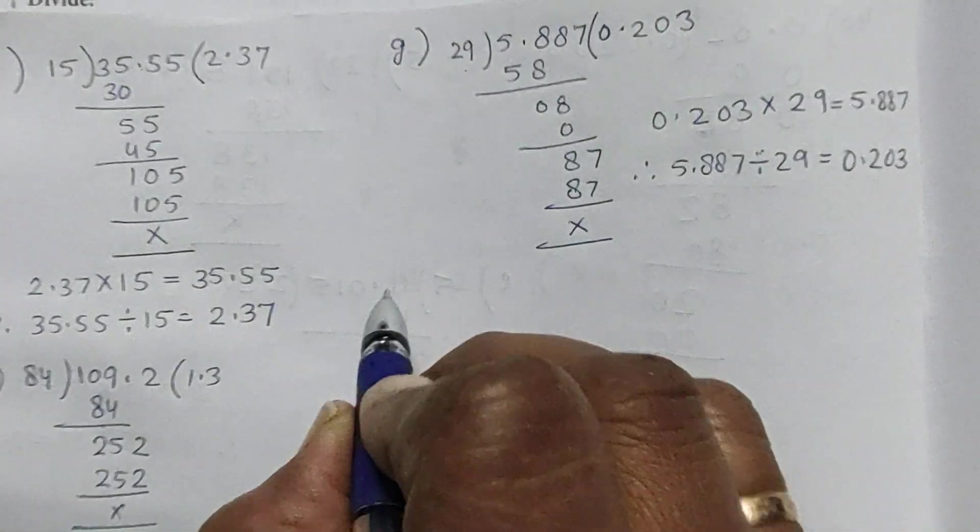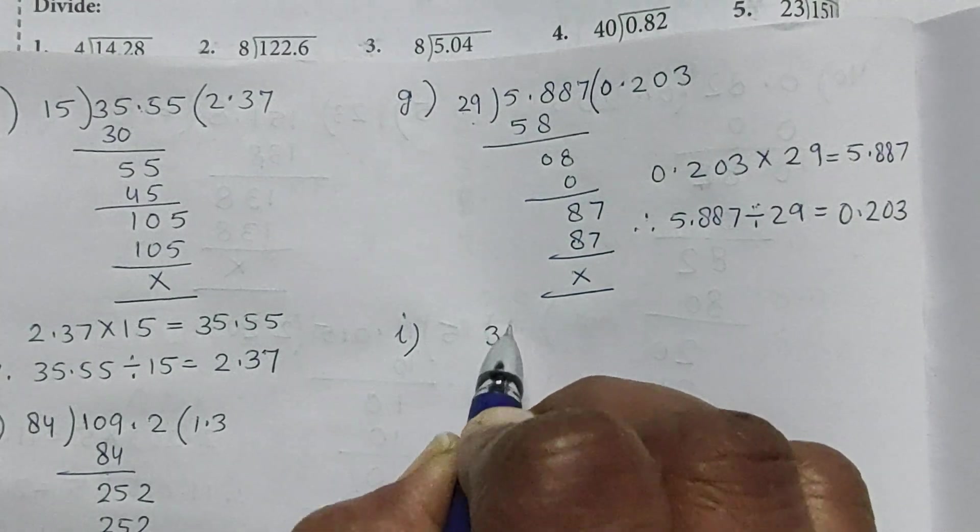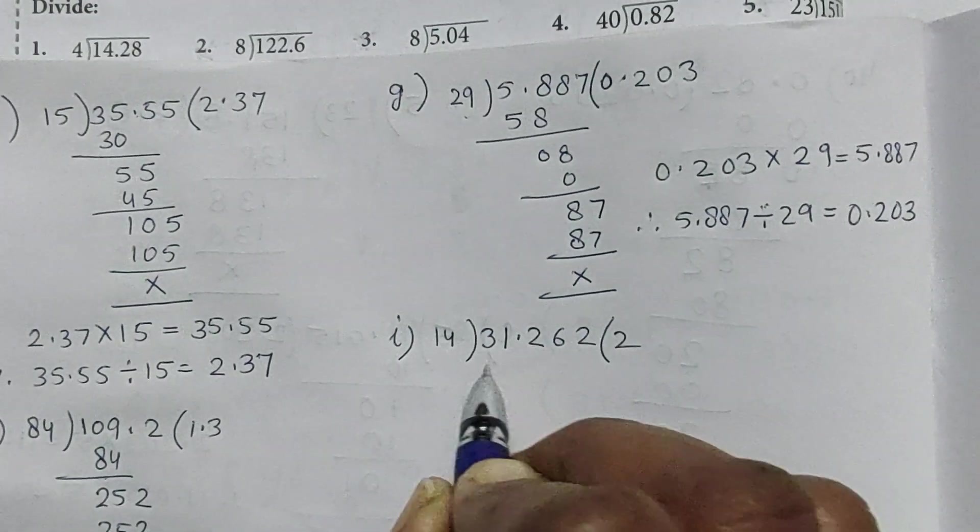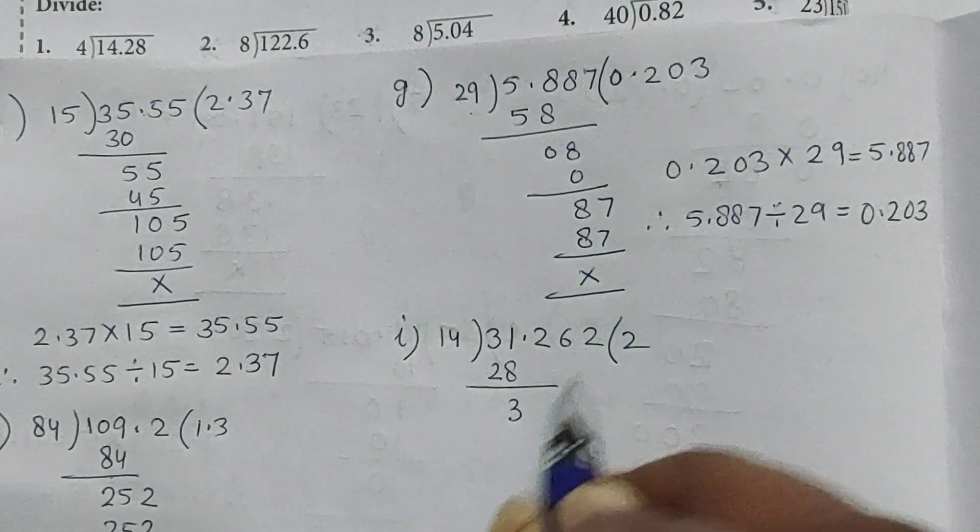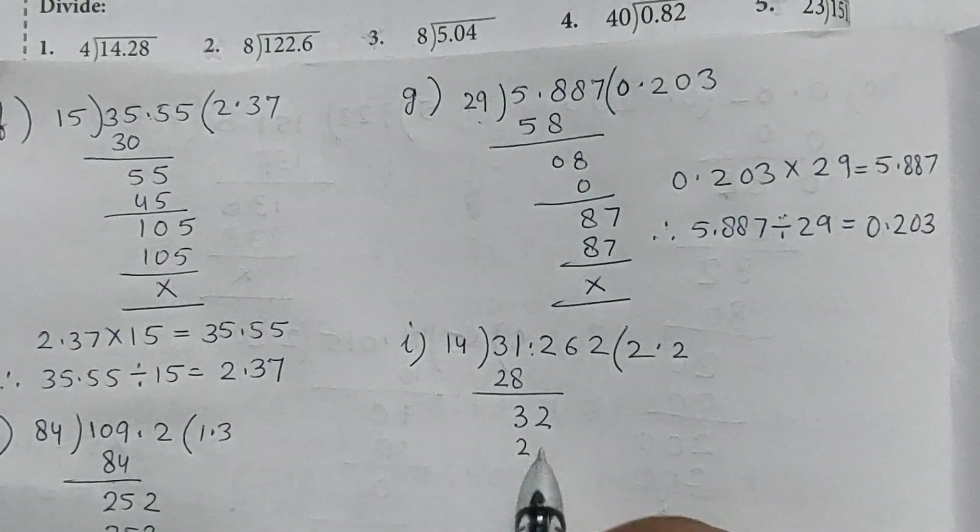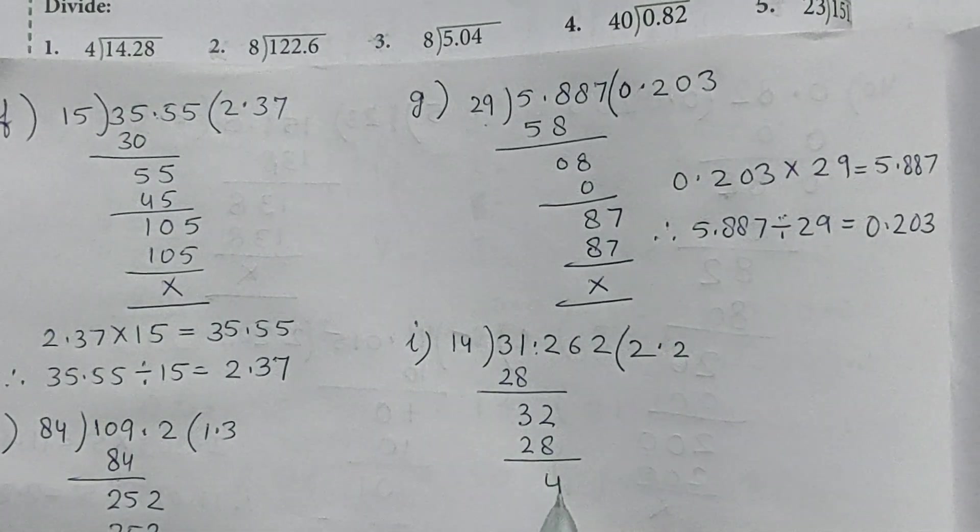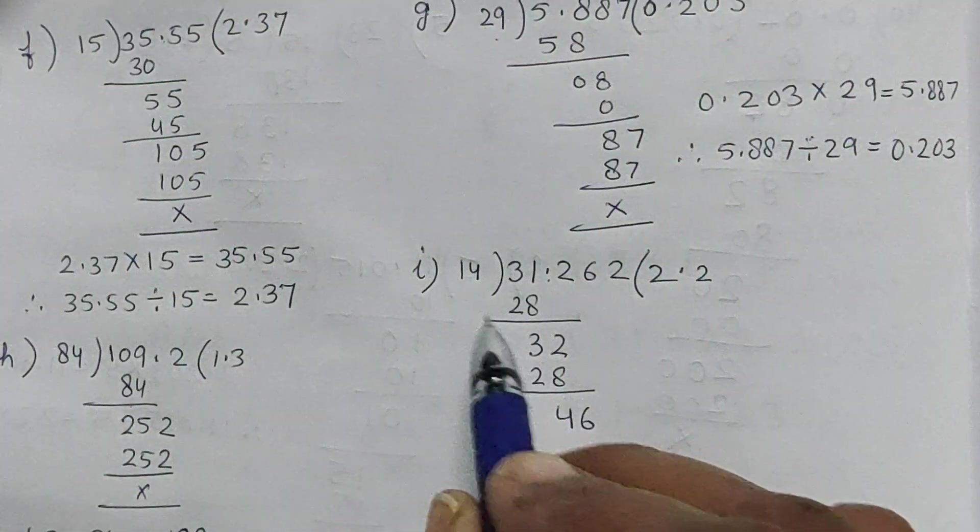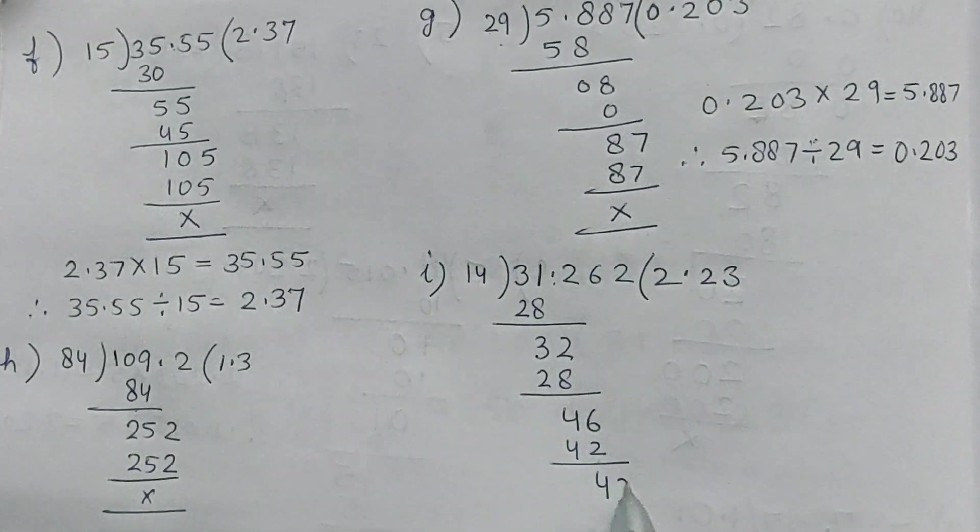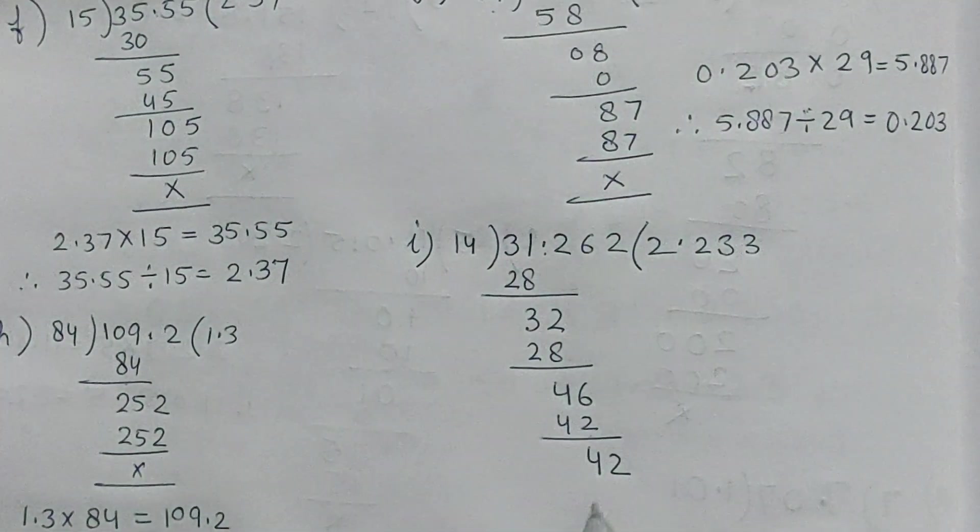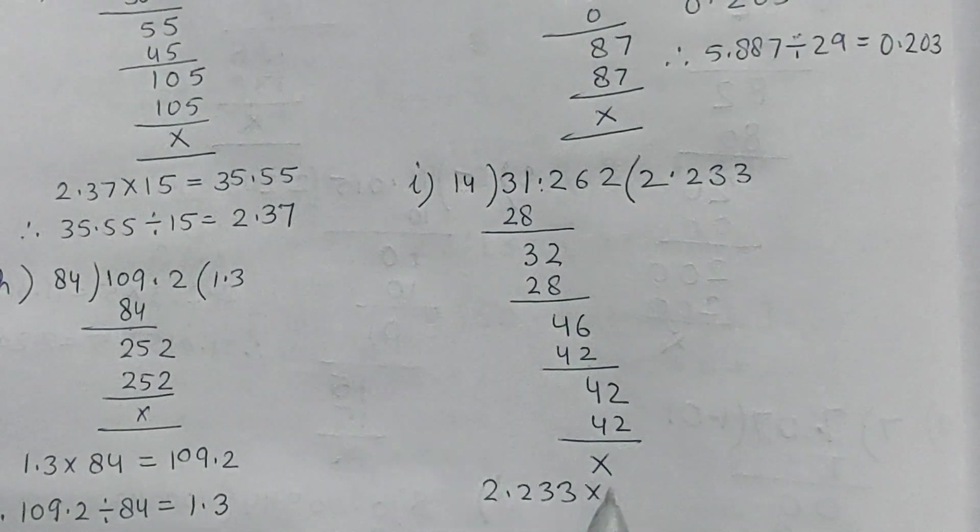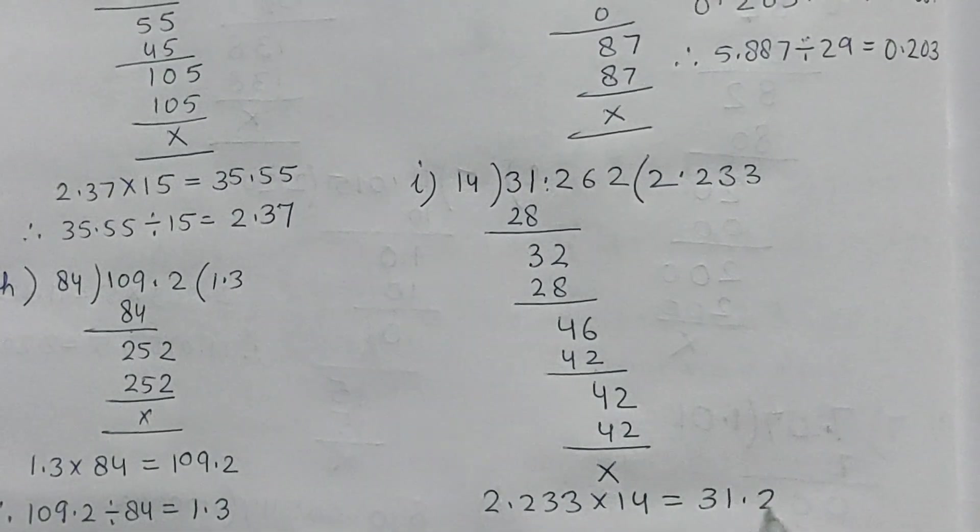Now part I: 31.262 divided by 14. 14 into 2 is 28. 31 minus 28 is 3. Point. Bring down 2. 14 into 2 is 28. 32 minus 28 is 4. Bring down 6. 14 into 3 is 42. Again bring down 2. 42.